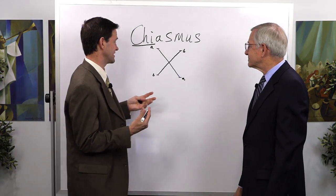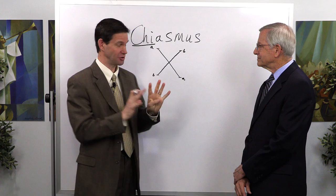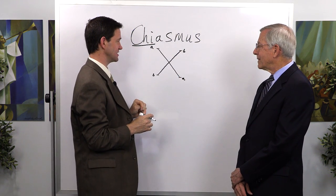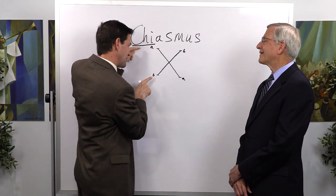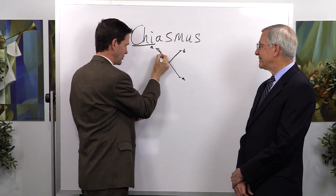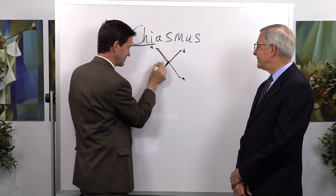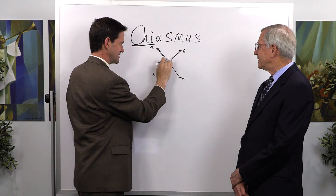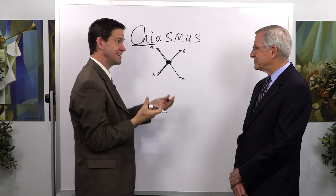So what you're saying is it's kind of an X marks the spot, bringing people to a point — almost like a diagram saying, here are all these aspects, here's a turning point, here are all these aspects again. And it's beautiful. Where in the world did you discover this in the Book of Mormon?